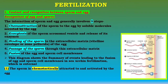The first event is contact and recognition between sperm and egg. The interaction of sperm and egg generally involves five steps: first is chemotaxis attraction of the sperm to the egg by soluble molecules secreted by the egg; second is exocytosis of the sperm acrosomal vesicle and release of its enzymes; third is binding of the sperm to the extracellular matrix — the vitelline envelope or zona pellucida; fourth is passage of the sperm through this extracellular matrix; fifth is fusion of the egg and sperm cell membranes. The diagram shows the summary of events leading to fusion in sea urchin fertilization.